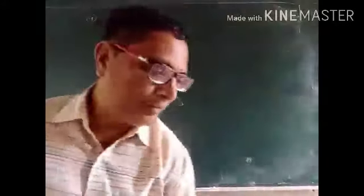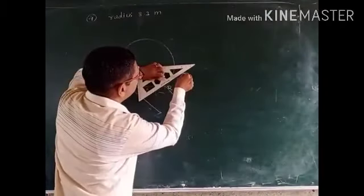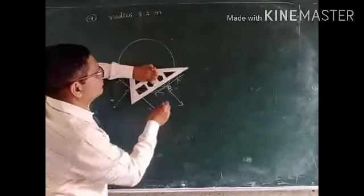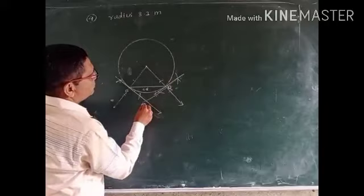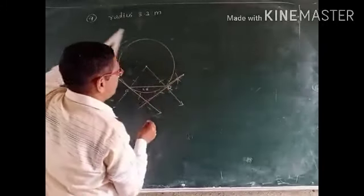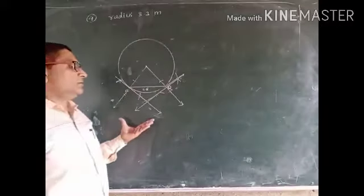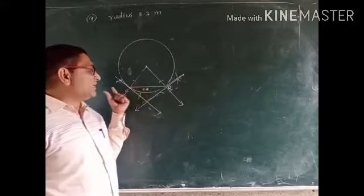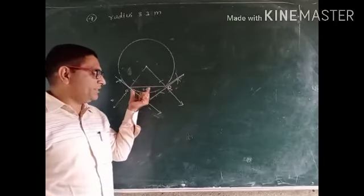Now joining these points gives us the final tangents. This activity tells us that we can draw tangents to the circle from two endpoints of a chord inside the circle.